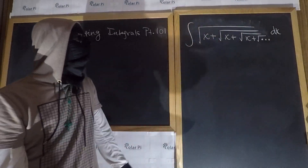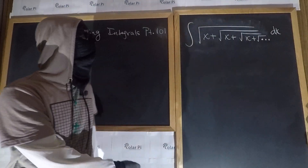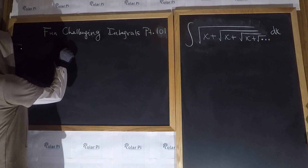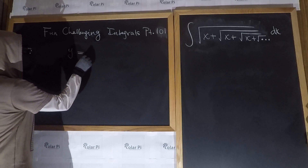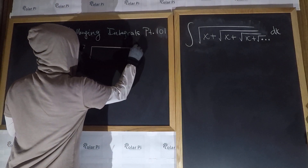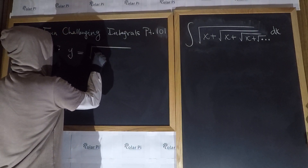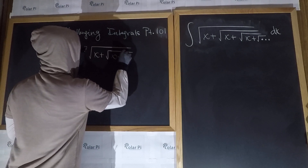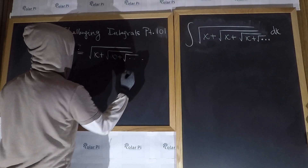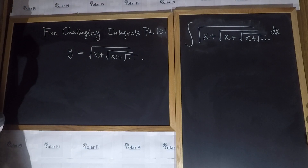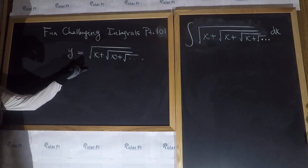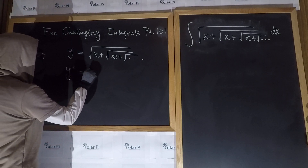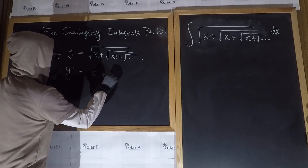Okay guys, so fun integral. Let's get on with it. To start, let's let y equal the square root expression — that's the square root of x plus the square root of x plus so on, ad infinitum. So if that's y, then we can square both sides of this and realize that y squared is equal to x plus y.